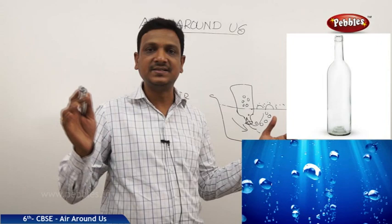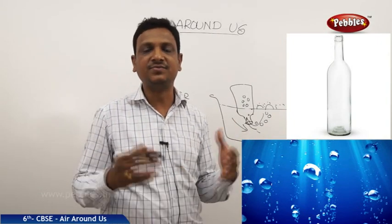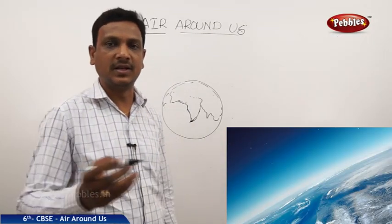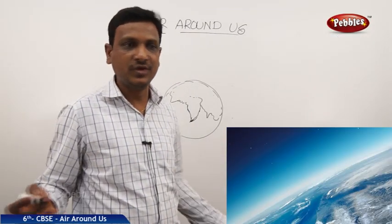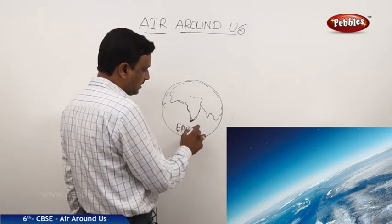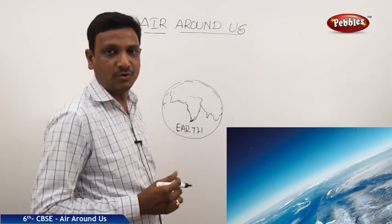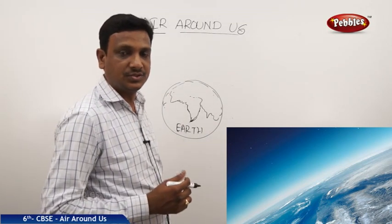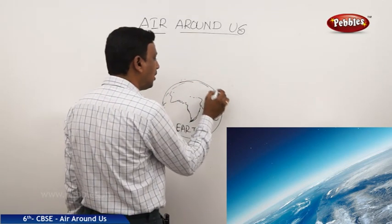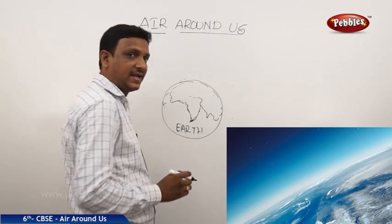So air is present everywhere, all around us, and it's very important. The air is all around us — we are on the Earth, Planet Earth, and the Earth is surrounded by air: a blanket of air called the atmosphere. The Earth is completely surrounded by this blanket of air.